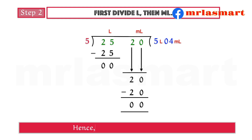Hence, 25 liters 20 milliliters divided by 5 equals 5 liters 4 milliliters.